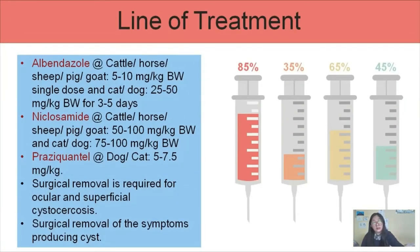Line of treatment: albendazole at the rate of 5–10 mg per kg for cattle, horse, sheep, pig, and goat, and for cat and dog it should be given at 25–50 mg per kg body weight for three to five days. Another option is niclosamide at the rate of 50–100 mg per kg for cattle, horse, sheep, pig, and goat, and 50–100 mg per kg body weight for cat and dog. Praziquantel at the rate of 5 to 7.5 mg per kg body weight for cat and dog. Surgical removal is required for ocular and superficial cysticercosis, and surgical removal of symptom-producing cysts can also be done.